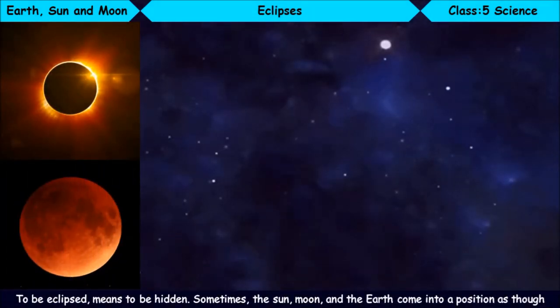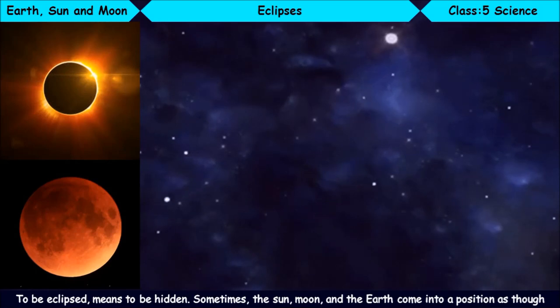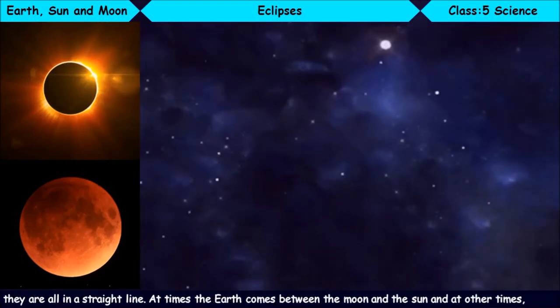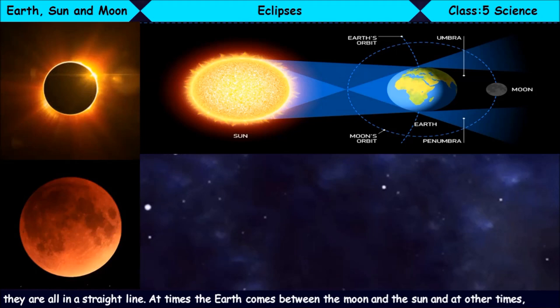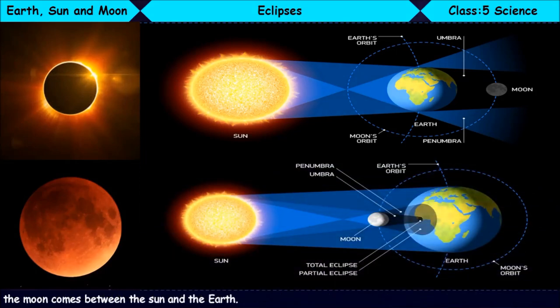Eclipses. To be eclipsed means to be hidden. Sometimes the Sun, Moon, and Earth come into a position as though they are all in a straight line. At times the Earth comes between the Moon and the Sun, and at other times the Moon comes between the Sun and the Earth.